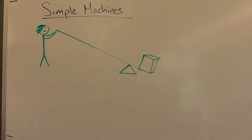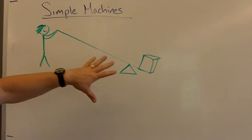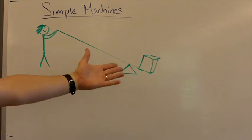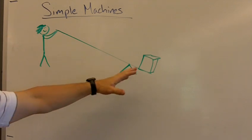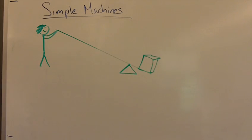Another simple machine is a lever. Here we have a picture of a person lifting a box up with a lever. The whole idea here is that this person may not be strong enough to lift this box up as high as they want it to go. So what do they do? They use a simple machine.